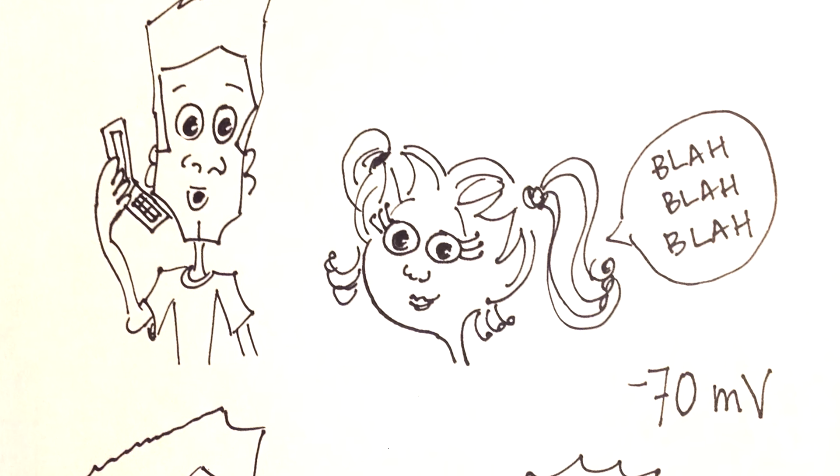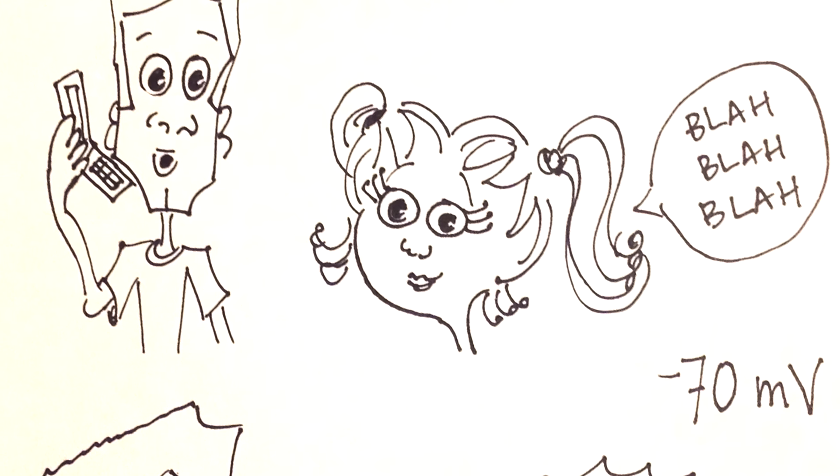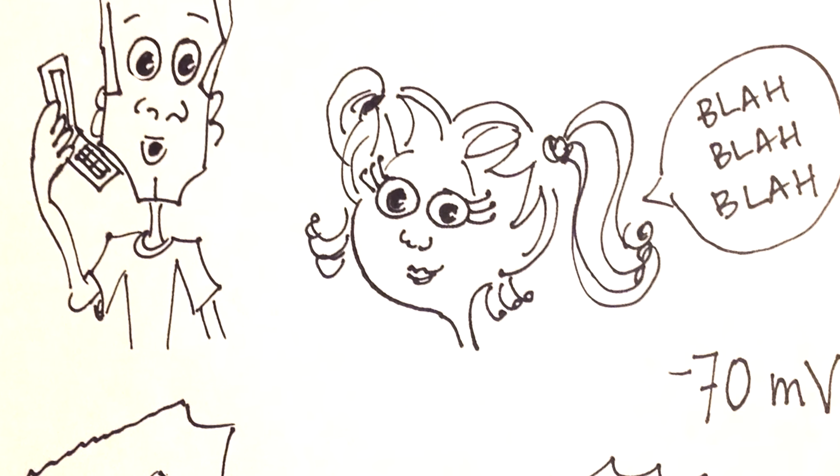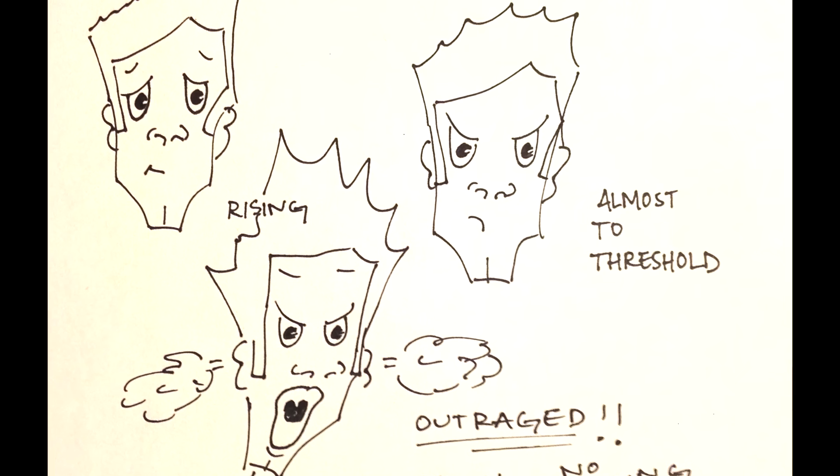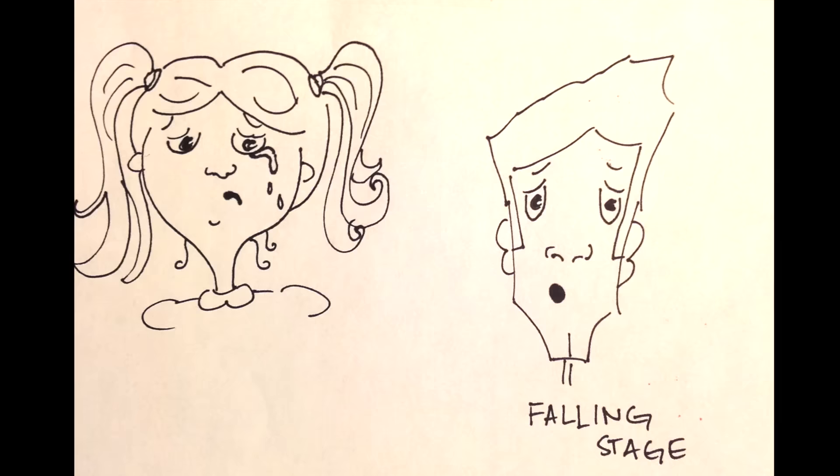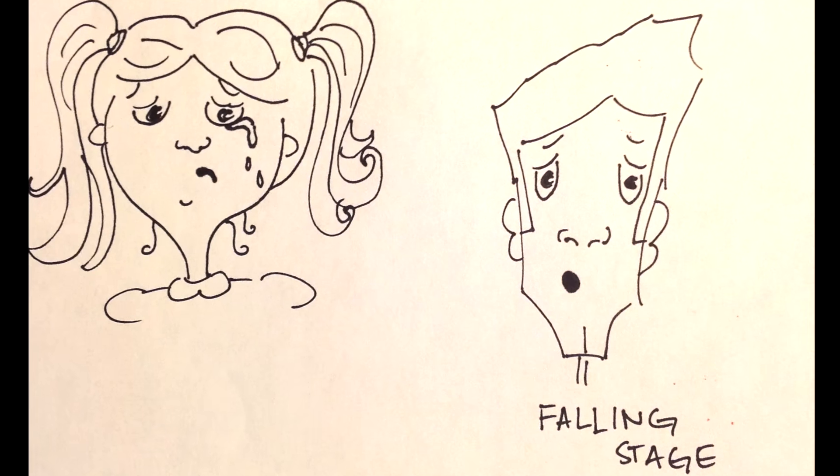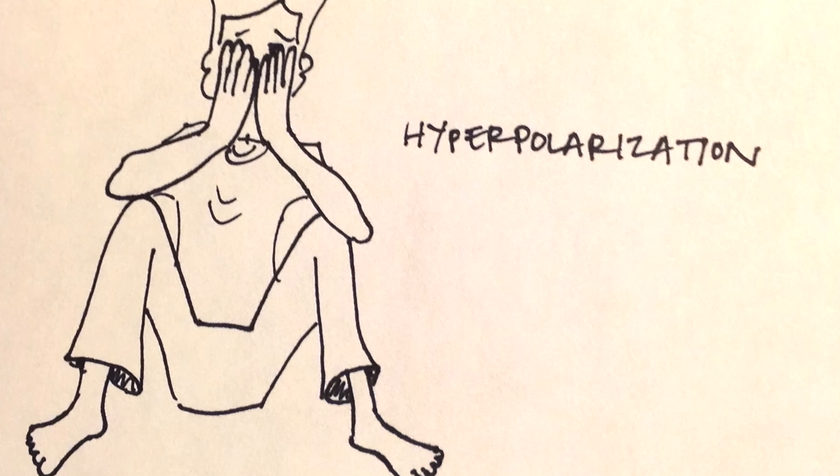But after that short period, the siblings were back to a normal pleasant state, which we will compare to the resting membrane potential of the action potential. The rising emotions of the brother we will compare to the rising phase and the outburst to the part of the action potential after reaching threshold. The brother calming down will be compared to the falling stage and the period of regret to the hyperpolarization phase.